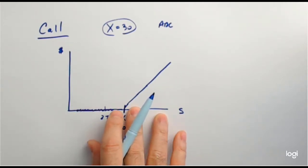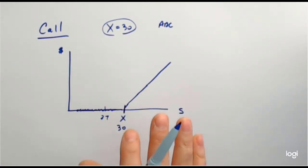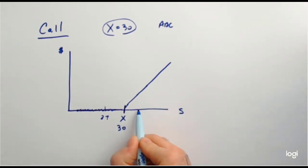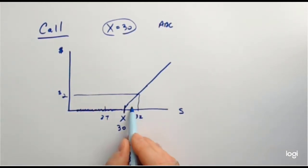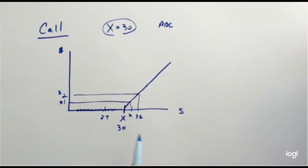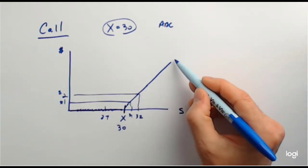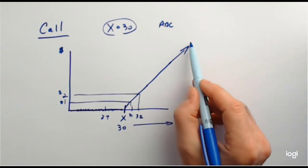I'm doing everything on a per-share basis. Even though the contract is 100 shares, do everything in your analysis on a per-share basis — at the very end you can multiply everything by 100. So if the stock is at $32, you're going to make $2 per share. If it's at $31, you make $1 per share. There's no payoff when the stock is below $30, and as soon as the stock starts going up, it's like a 45-degree angle — that's where you make your profits.